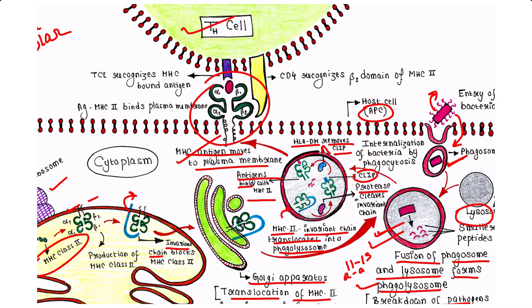The TH cell possesses a T cell receptor and the coreceptor CD4 on its surface. TCR recognizes the MHC-bound antigen, whereas CD4 recognizes the beta-2 domain of the MHC class 2 molecule. Once the TH cell recognizes this complex, it initiates the subsequent defensive mechanism.